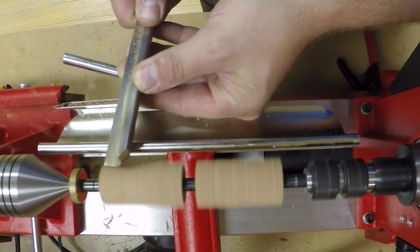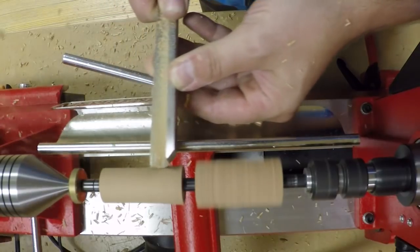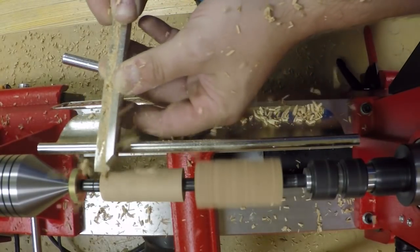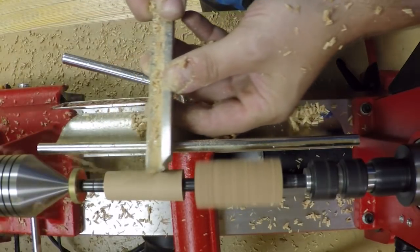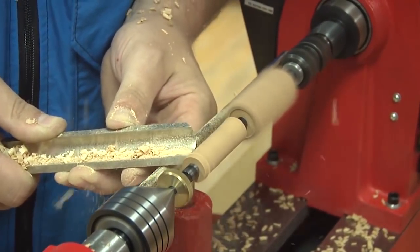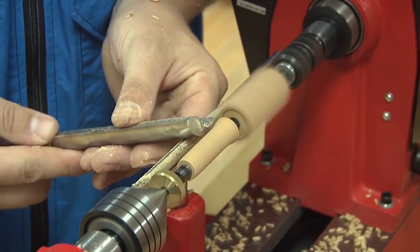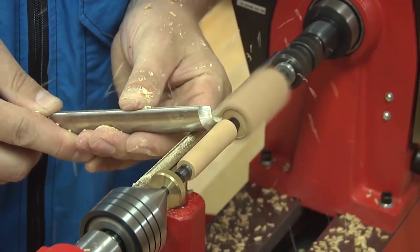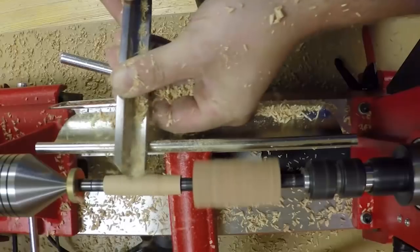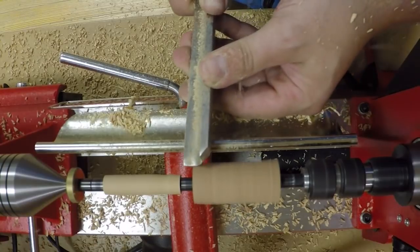I'm just going to use a spindle roughing gouge, shape the blanks, bring them down to size for the finished cuts. Most pins you can turn with just a spindle roughing gouge. Flip the gouge over and work up closer. Once I get one roughed down most of the way I like to go back to the other one and rough it down most of the way and then do my finished cuts later.